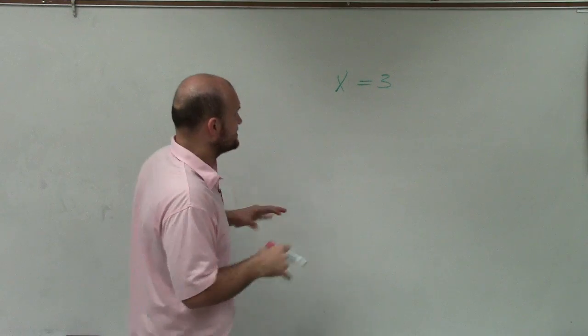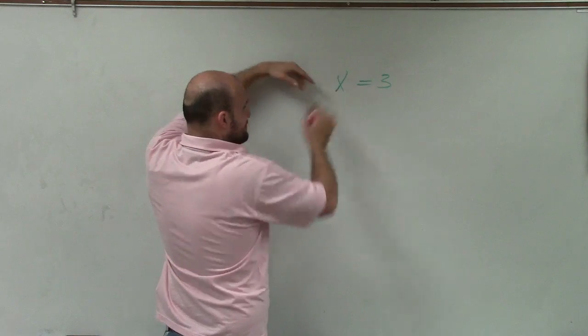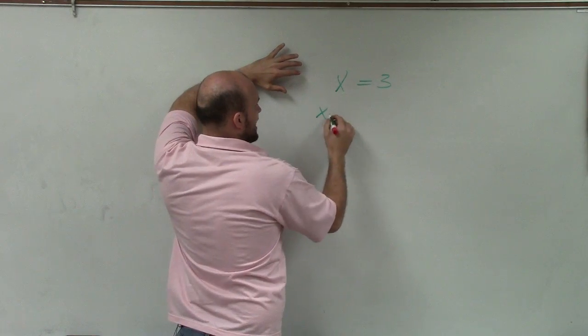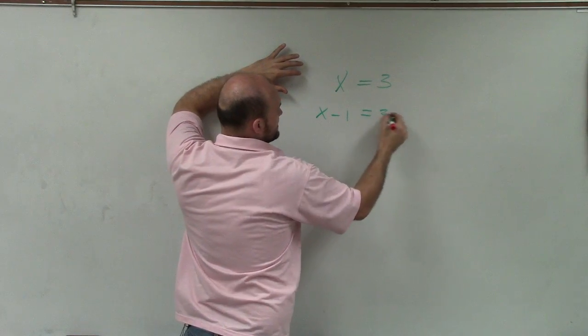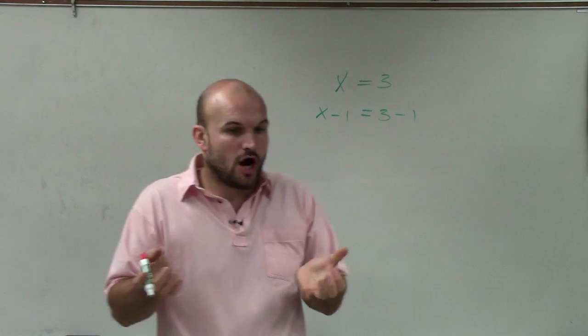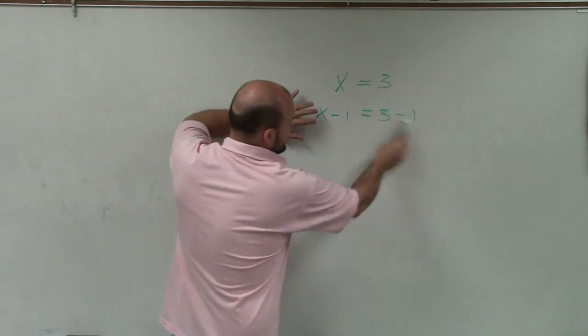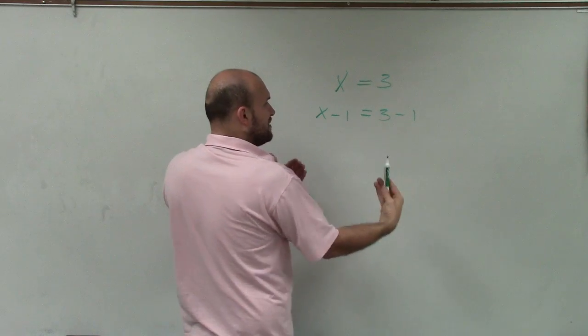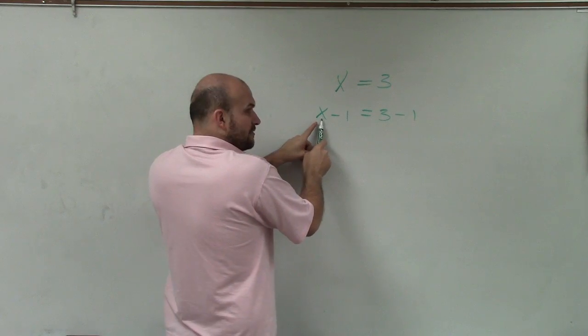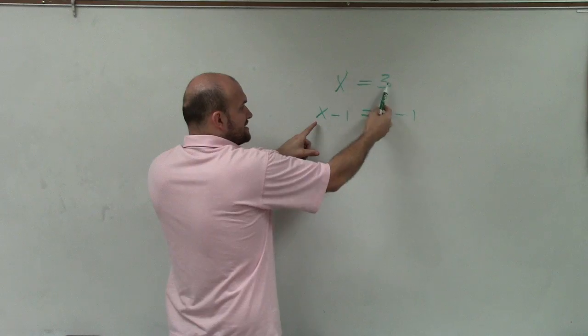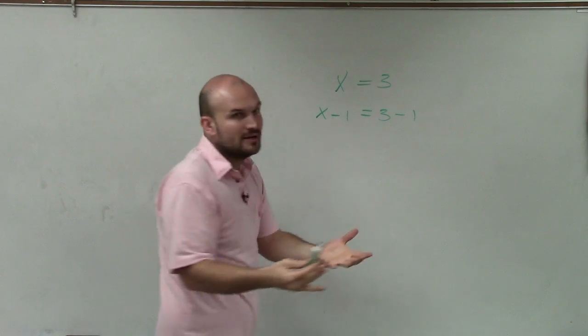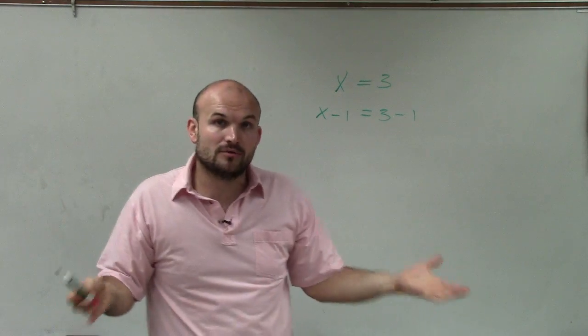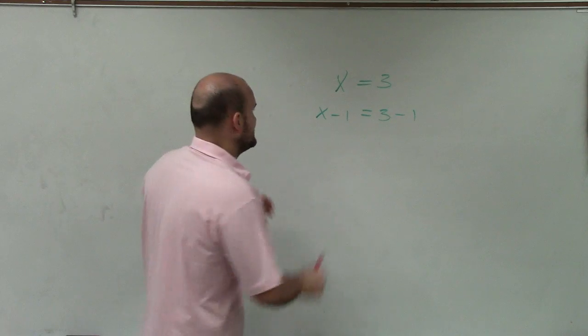So for instance, we know that the value of x is 3, right? But what about if I subtract 1 on both sides? Now, we can see that these equations are not the same. They're not in the same format. However, they are equivalent. Because when I put a 3 in for x, or I substitute x in for 3, the value of this equation is still equal, right? The left side still equals the right side.